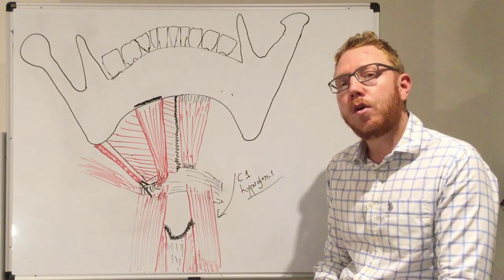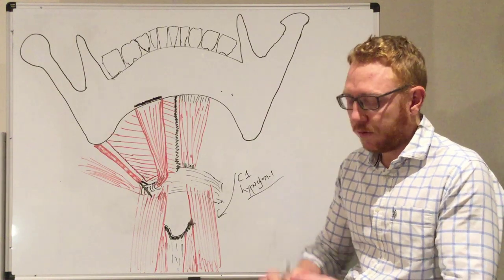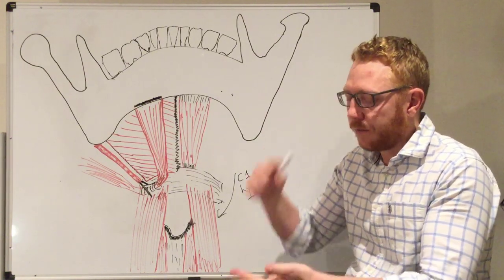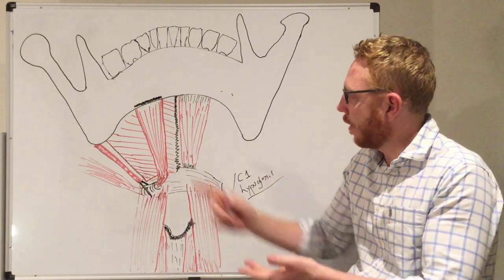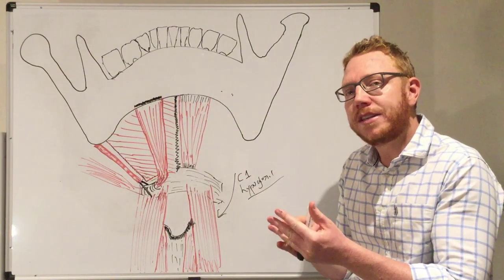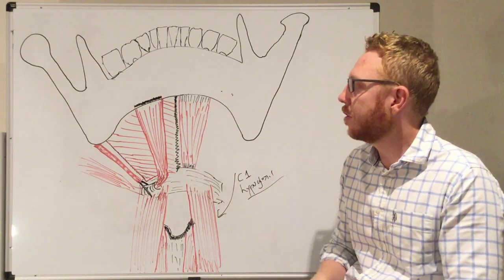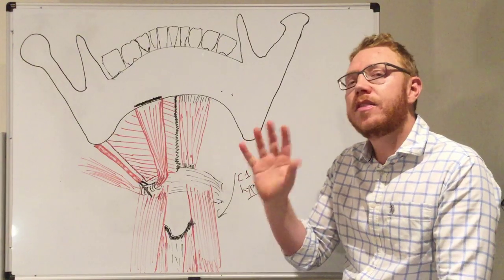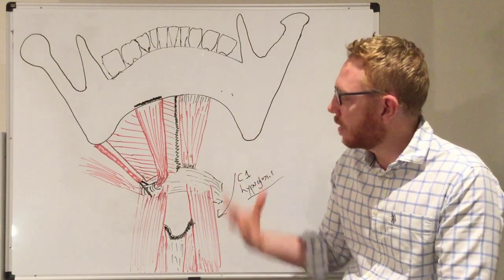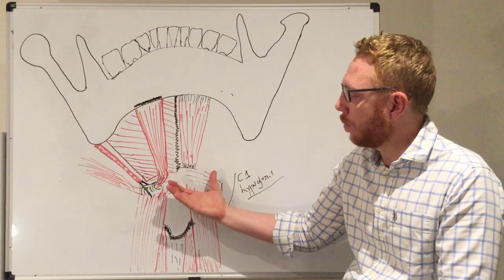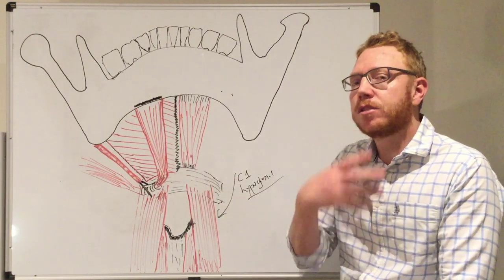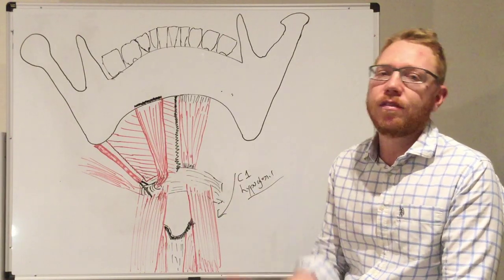So those are the four muscles of the suprahyoids: the digastric, the stylohyoid, the mylohyoid, and the geniohyoid. We've covered their attachments, their nerve innervations, and their slightly different actions. As a whole, they help to elevate the hyoid, which is particularly important for speech and swallowing.